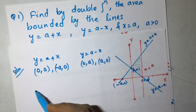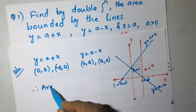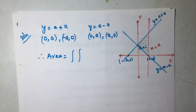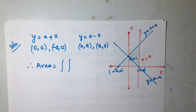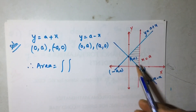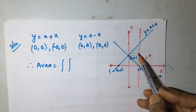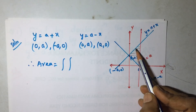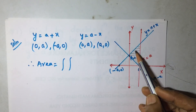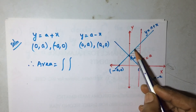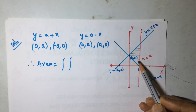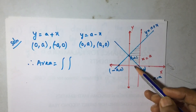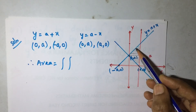The required area equals a double integral over the region. To decide whether to use dx dy or dy dx: if we use dx dy, consider a horizontal strip — as it moves, its endpoints fall on different lines at different positions, requiring two separate integrals.